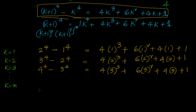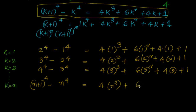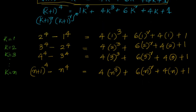For the nth term, substituting k equal to n: n plus 1 whole to the power of 4 minus n to the power of 4 equals 4 into n cube plus 6 into n square plus 4 into n plus 1. In between there are many terms following the same pattern — we have written for k equal to 1, 2, 3 and then for k equal to n.